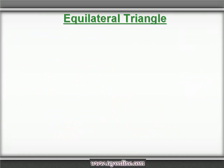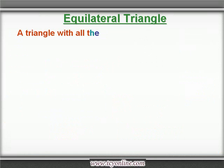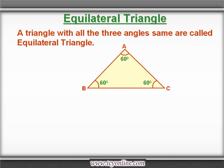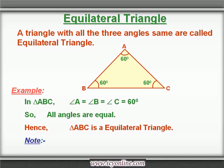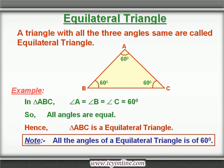Let's learn about the equilateral triangle. In an equilateral triangle, the measure of all three angles is the same — angle A equals angle B equals angle C. From the angle sum property, the sum of the three angles is 180 degrees. If we divide 180 degrees into three equal angles, it will be 60 degrees each. So in an equilateral triangle, the measure of each angle is always 60 degrees.